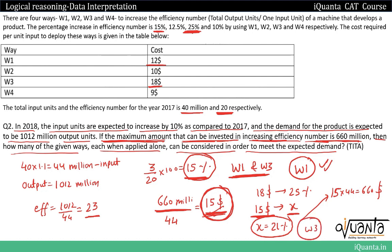So both W1 and W3 can be employed. To summarize: we first found the required efficiency increase of 15%, selected ways meeting that threshold (W1 and W3), then checked the budget at $15 per unit input. W1 passed directly; for W3 we verified that a proportionally reduced efficiency of ~21% still exceeds the 15% requirement, so W3 can also be employed within the 660 million budget.